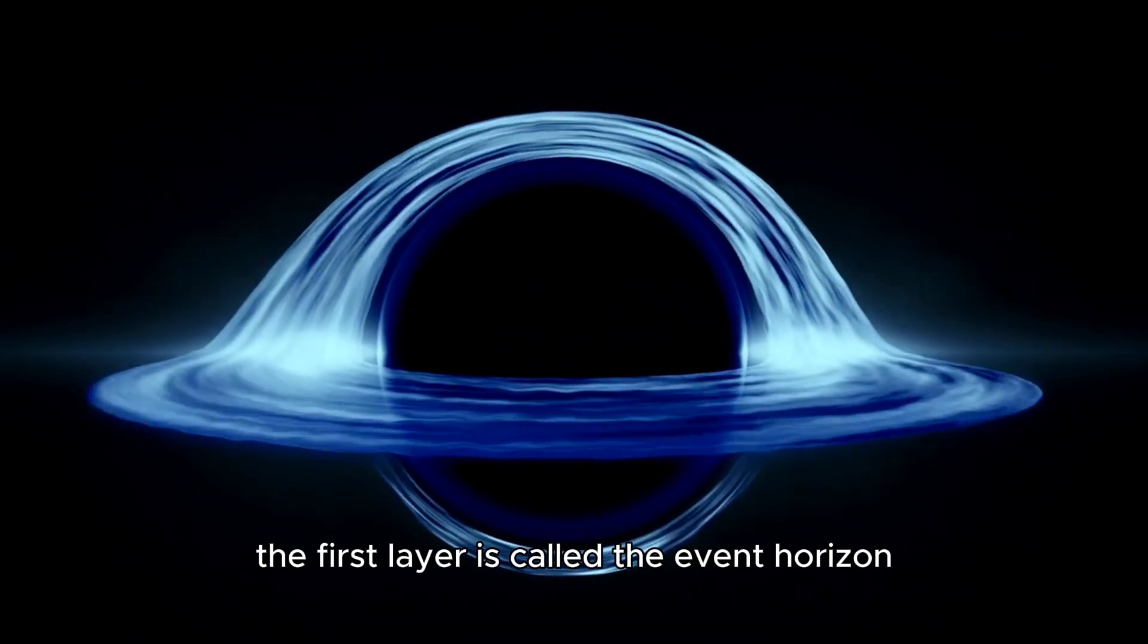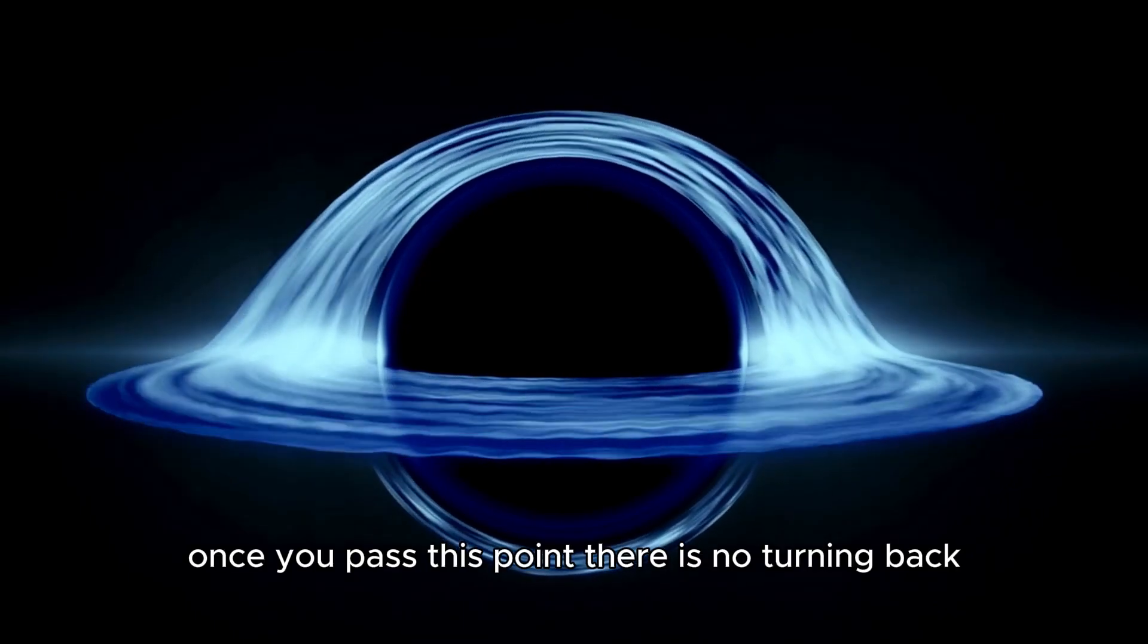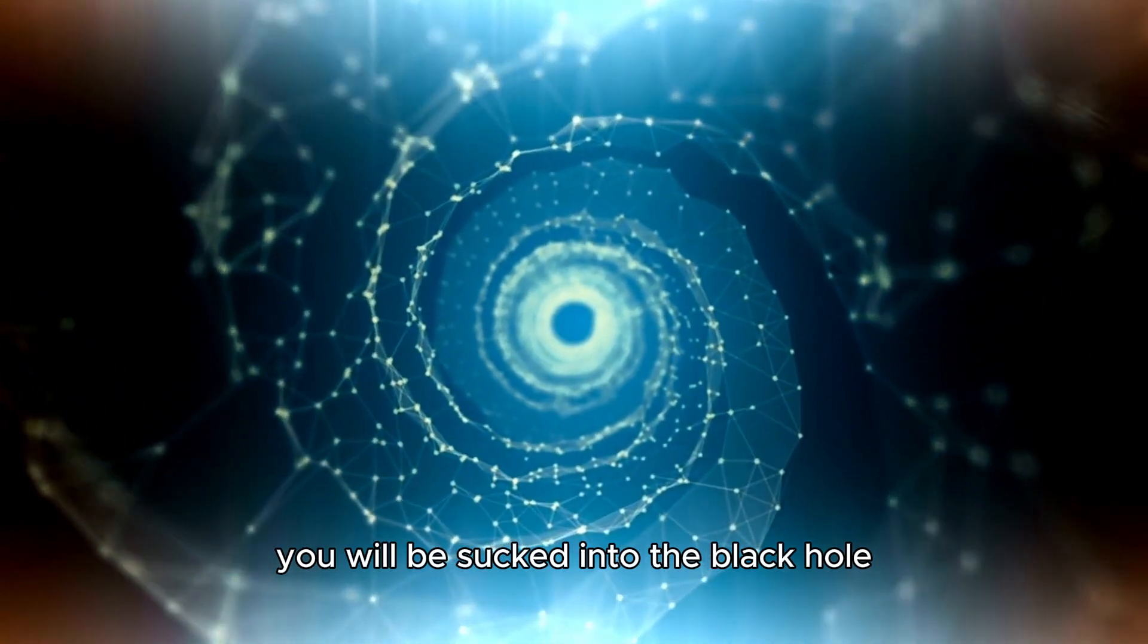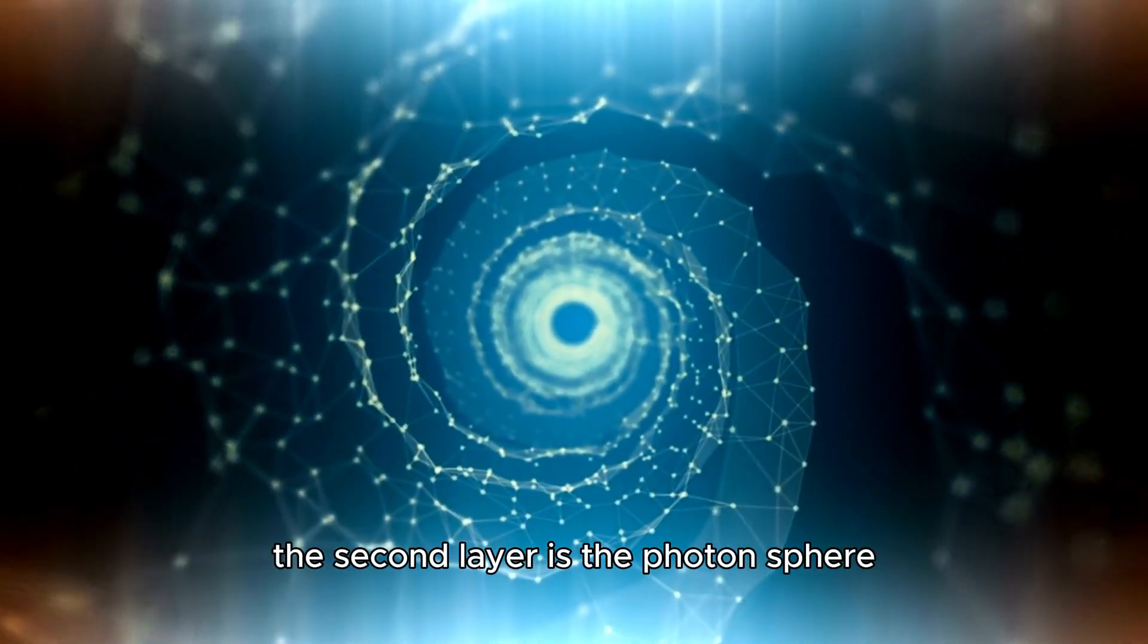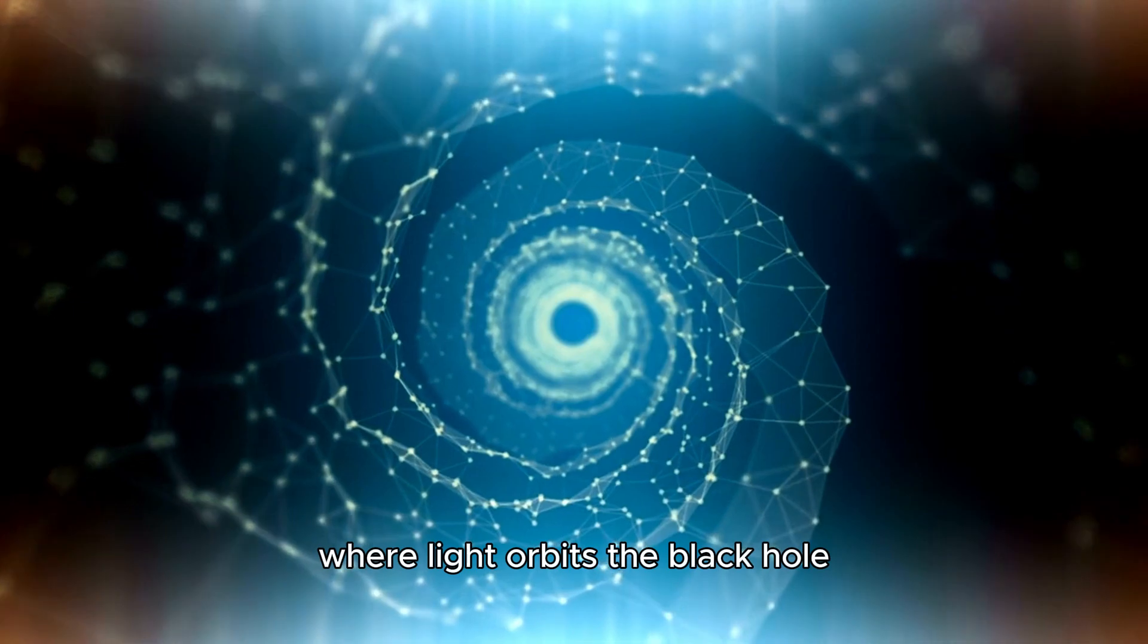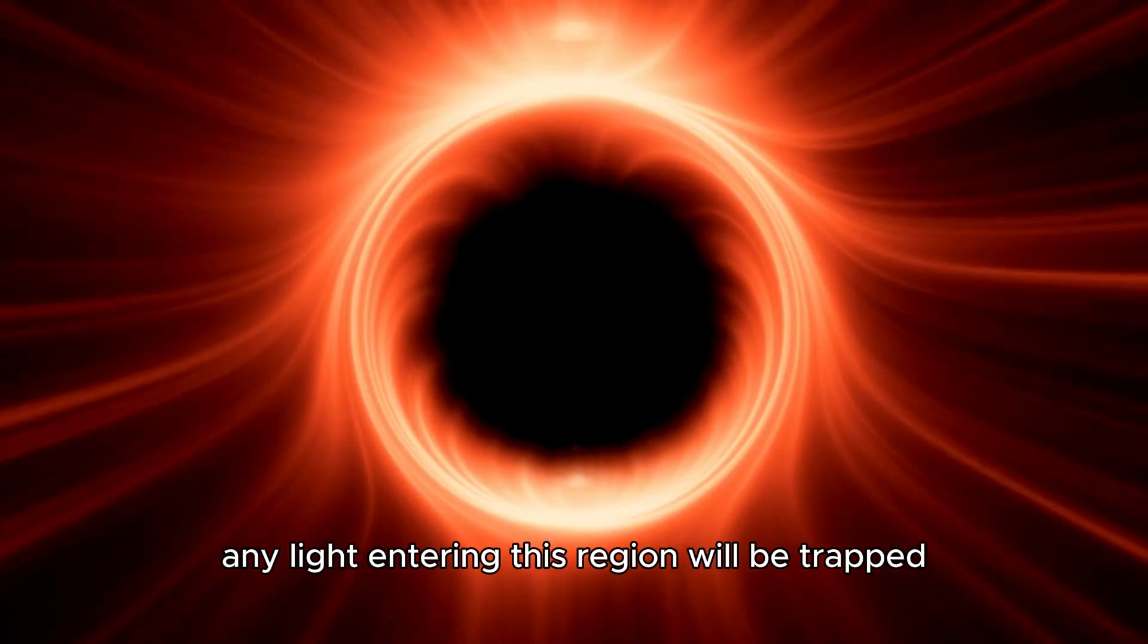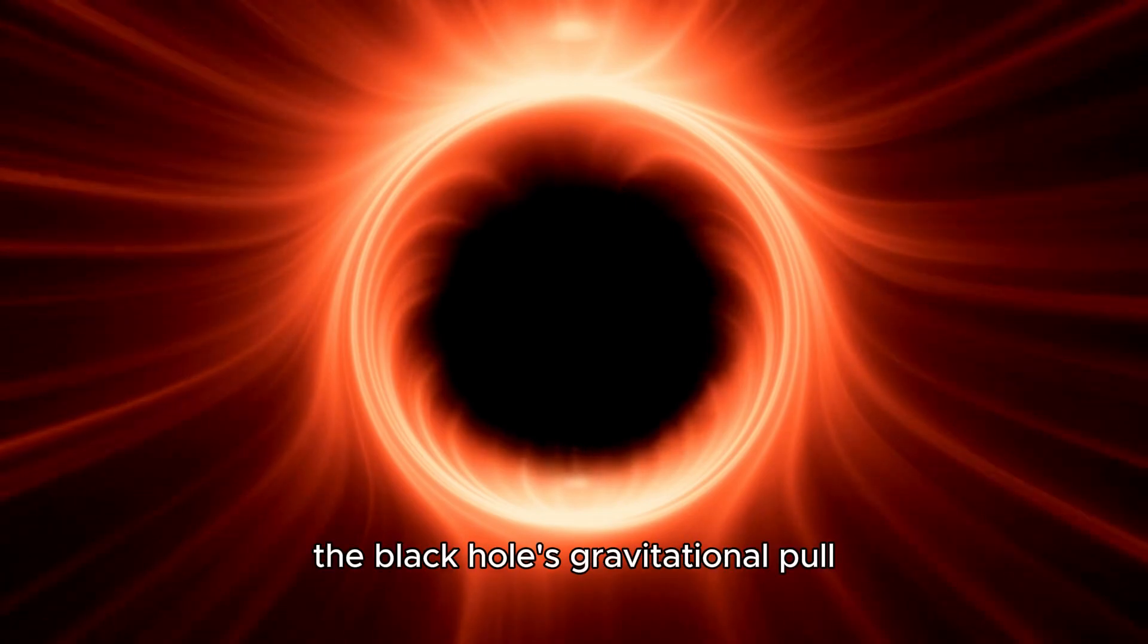The first layer is called the event horizon. Once you pass this point, there is no turning back. You will be sucked into the black hole. The second layer is the photon sphere, where light orbits the black hole. Any light entering this region will be trapped and unable to escape the black hole's gravitational pull.